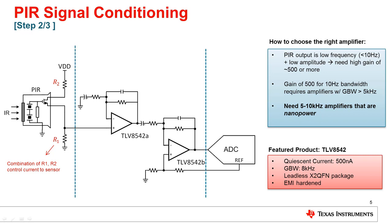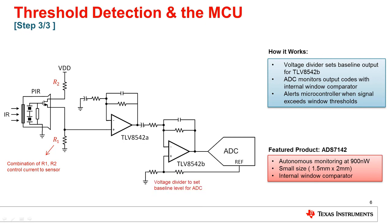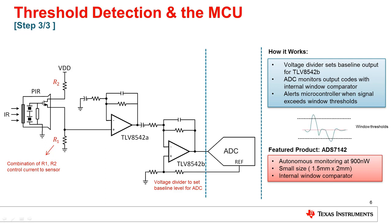Next, we'll look at the ADC that is responsible for the actual threshold detection. You'll notice that there is a voltage divider from the ADC leading into our second amplifier. This divider sets the baseline output level and will correlate to a specific numeric code in the ADC. The ADC has an internal window comparator that can detect when our signal exceeds this code in either direction. These thresholds are programmable, giving the designer full control on when to alert the microcontroller. Here, you can see an example graph showing the sensor signal crossing the window thresholds indicating motion. Once motion is detected, the ADC sends an alert to the microcontroller, which can then take an appropriate action depending on the application, such as turning on your lights.